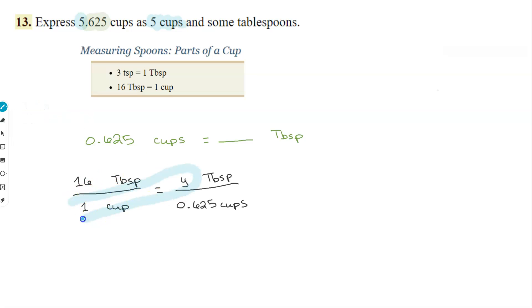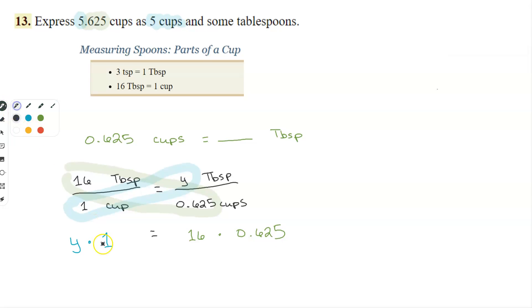So y times one. 16 times 0.625. We don't actually need to do anything on the left-hand side.